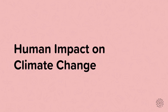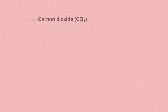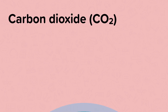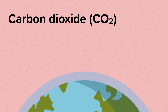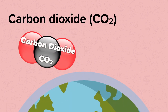This nugget is on the human impact of climate change. To recap, carbon dioxide is a compound with one atom of carbon and two atoms of oxygen. It is a greenhouse gas. It absorbs solar energy in the atmosphere as part of the greenhouse effect. As a result of the greenhouse effect, global warming occurs. Global warming is a gradual increase in the average global temperature.